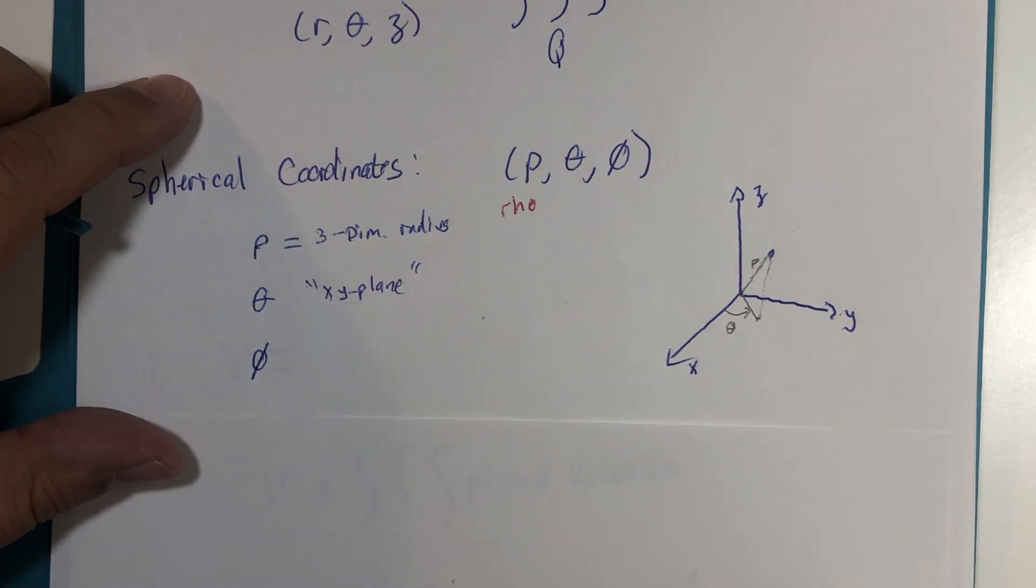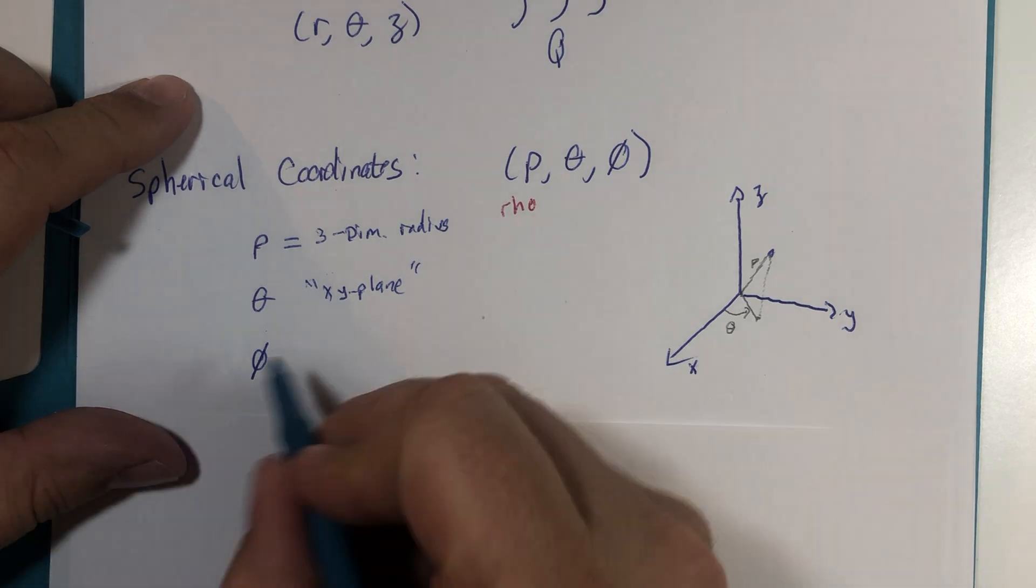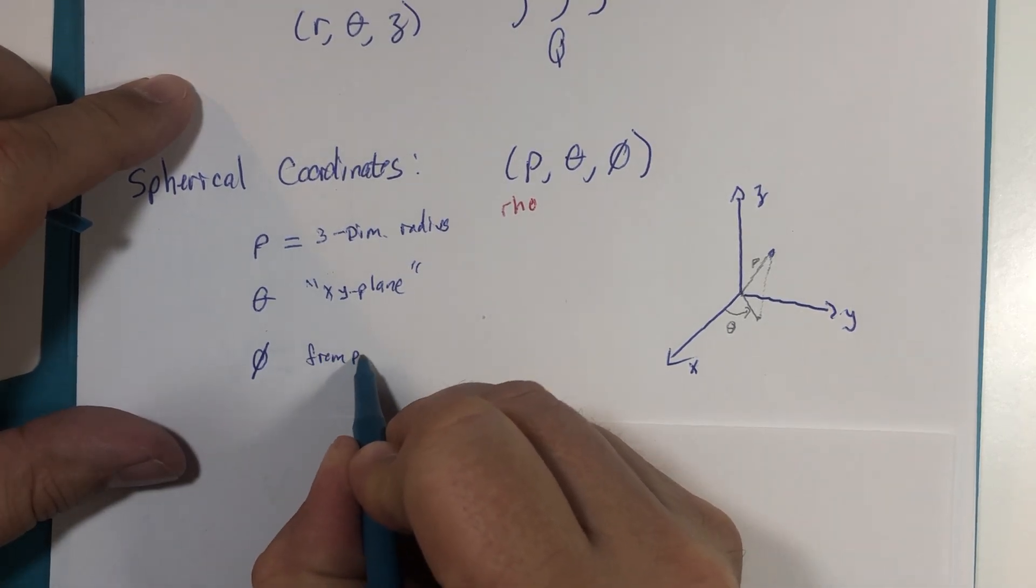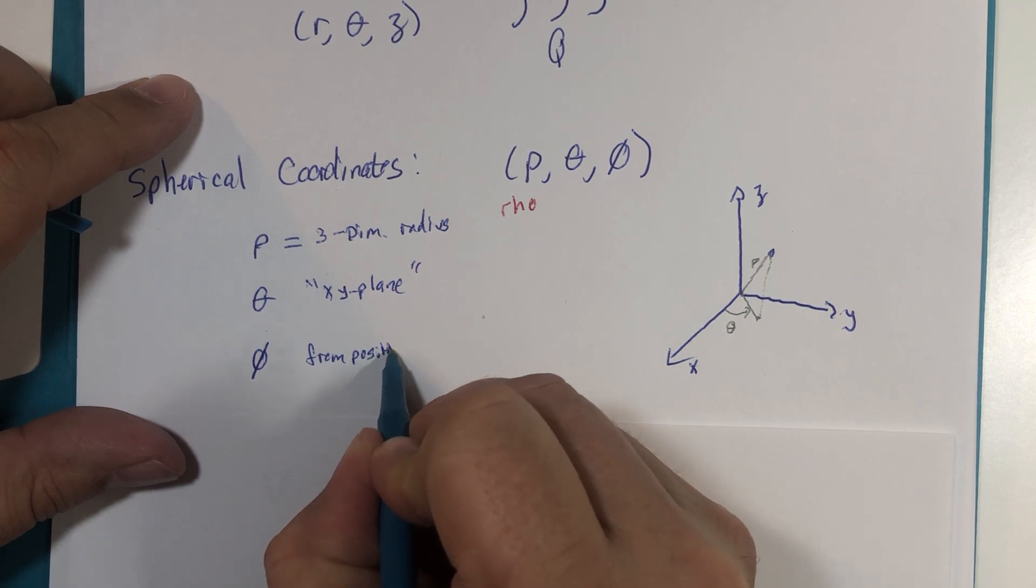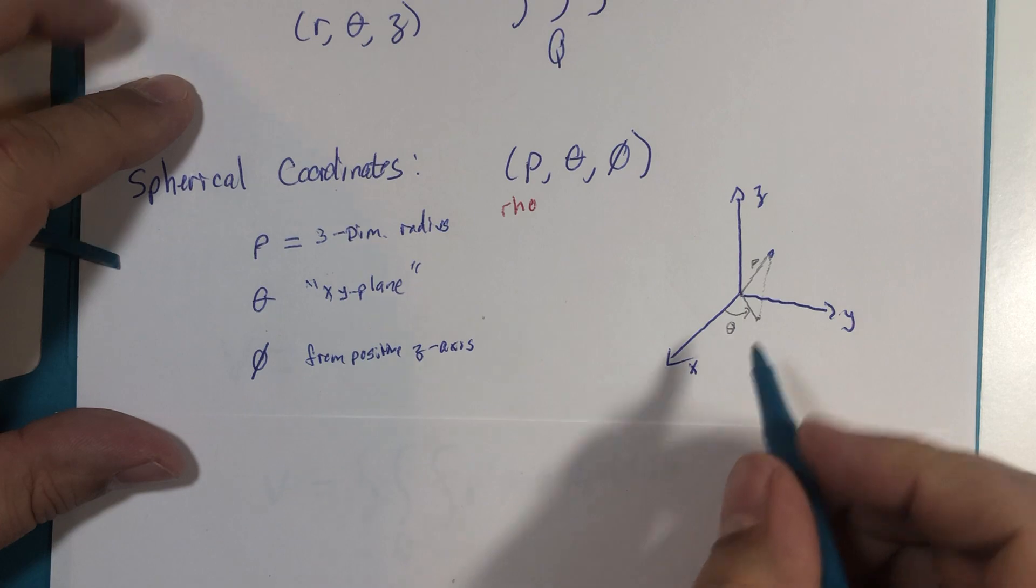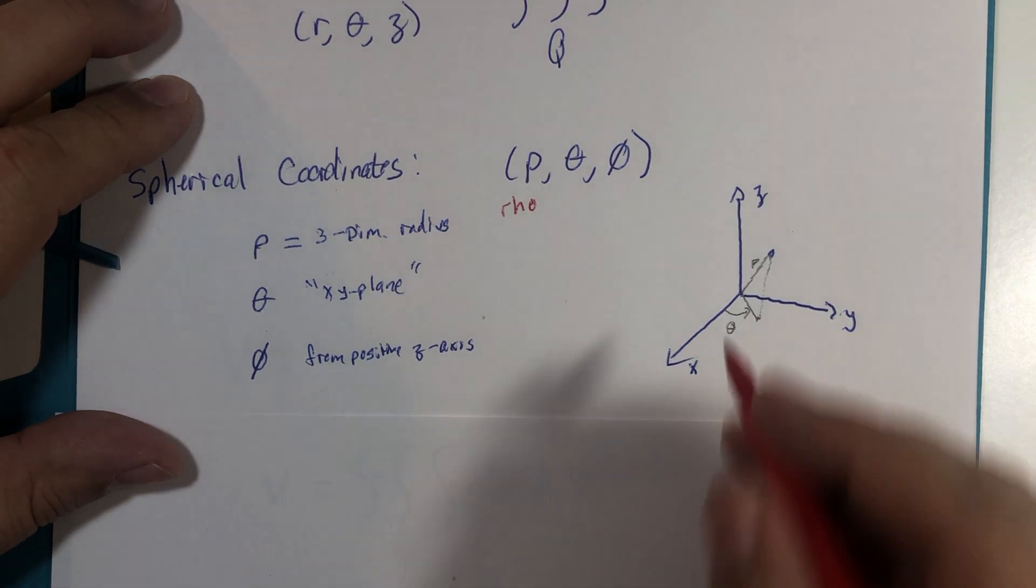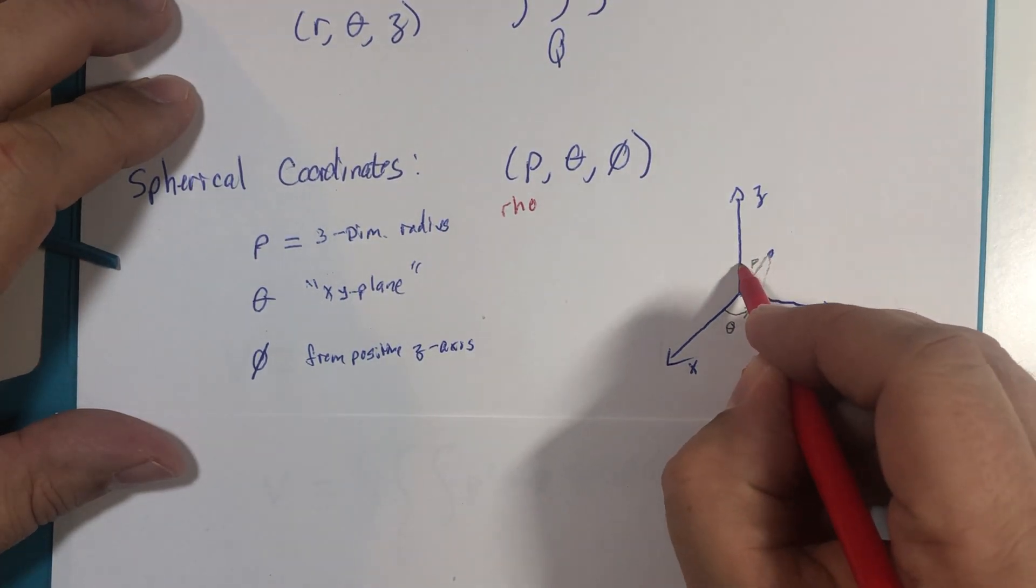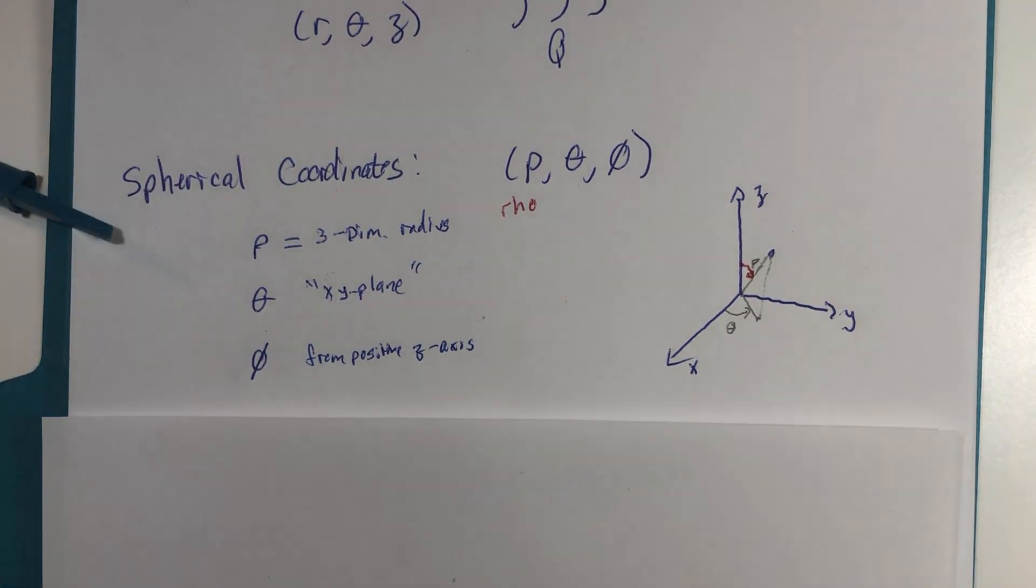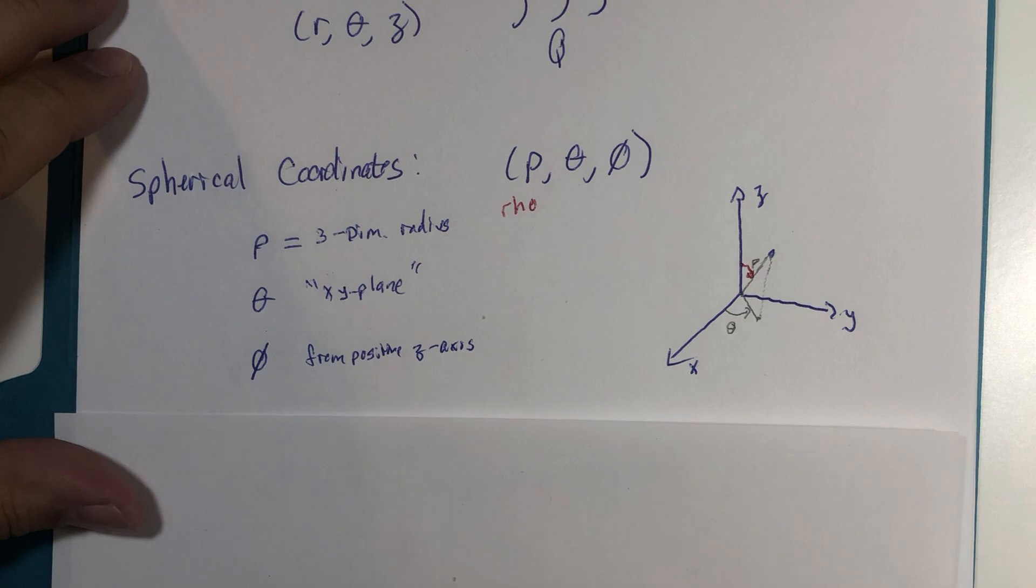And then finally, the angle phi is from the positive z-axis. I kind of overwrote my work here, but it would be from this place down to here. That would be the angle phi. Now again, we've used this coordinate system before, so the expectation is you have seen a little bit of it.